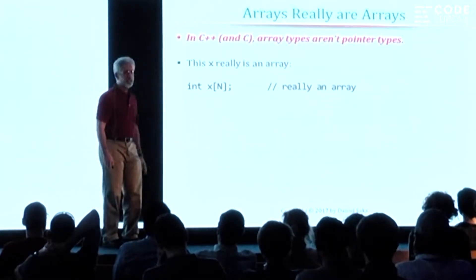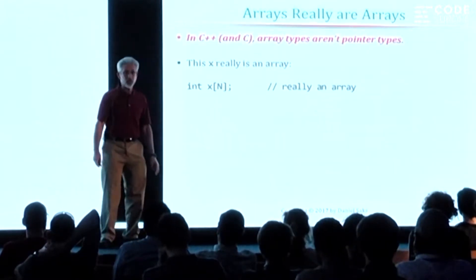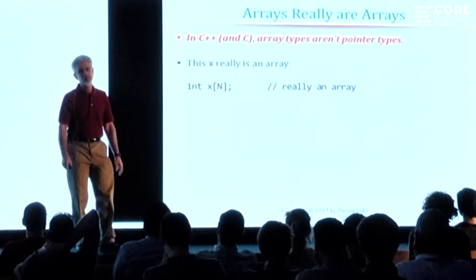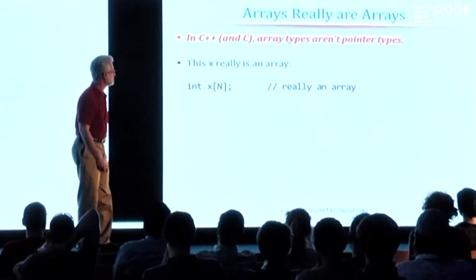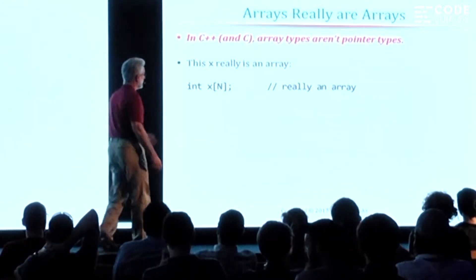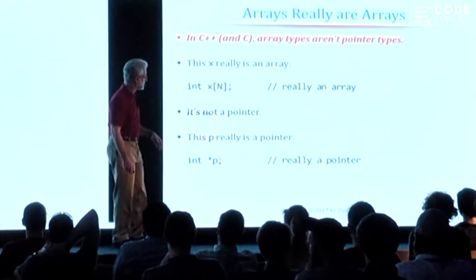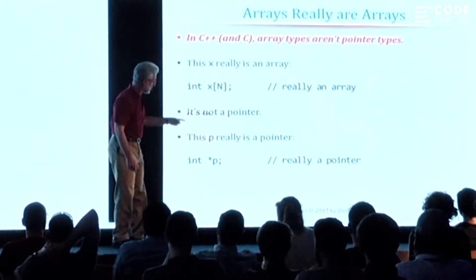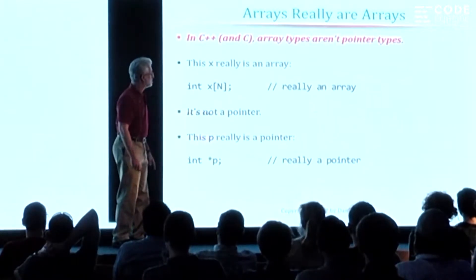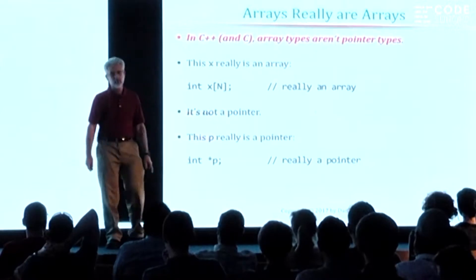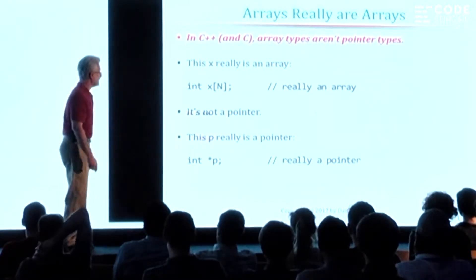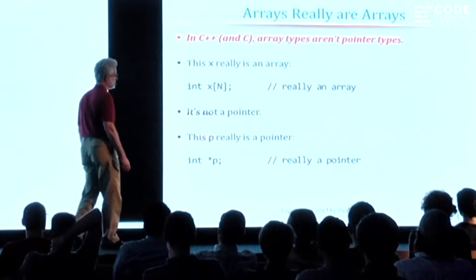There really is such a thing as an array type. And when you declare an object of an array type, it isn't a pointer. So this is really an array, not in the sense that this thing is a pointer. And that's a fundamental confusion that I've encountered many, many times in dealing with C and C++ programmers.